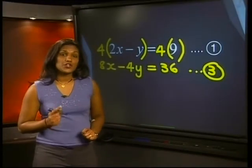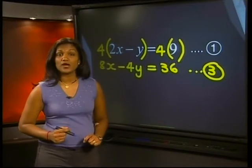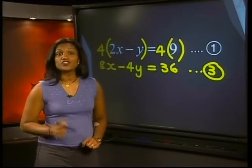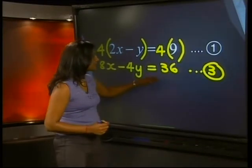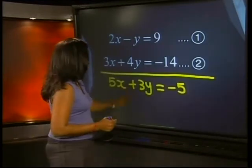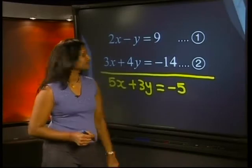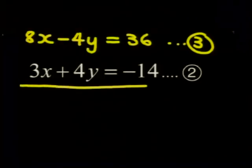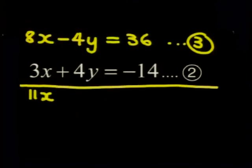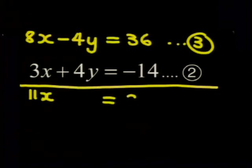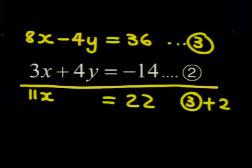Very clear labels for your equations are important tools when you're working with simultaneous equations. So, now we can use equation 3 and equation 2 to solve our simultaneous equations. To eliminate the y's, we add like terms in the two equations. We get x is equal to 2.